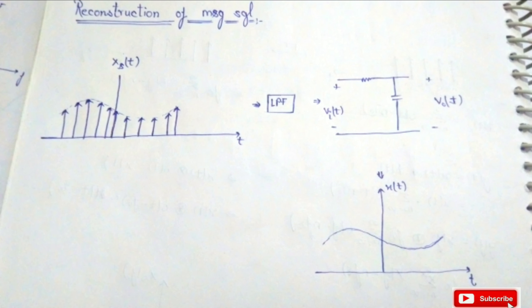In the last video we discussed the sampling theorem in which we change our analog signal into the sampled signal. Now in this video we see how to reconstruct our message signal from the sampled signal, because at the receiver side we have to again change the digital signal back into analog form.